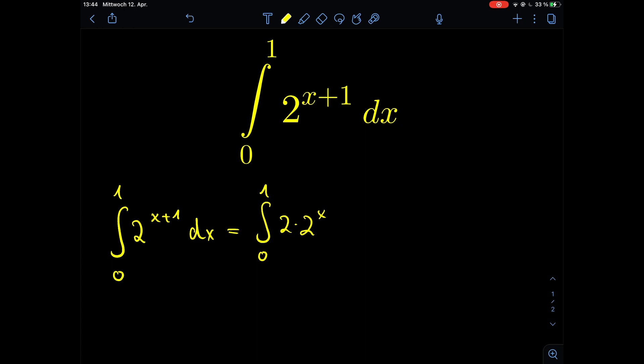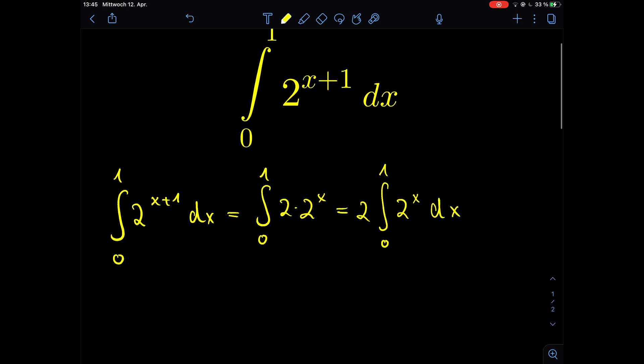We can extract the 2 out of the integral so we have 2 times the integral from 0 to 1, 2 to the power of x dx.